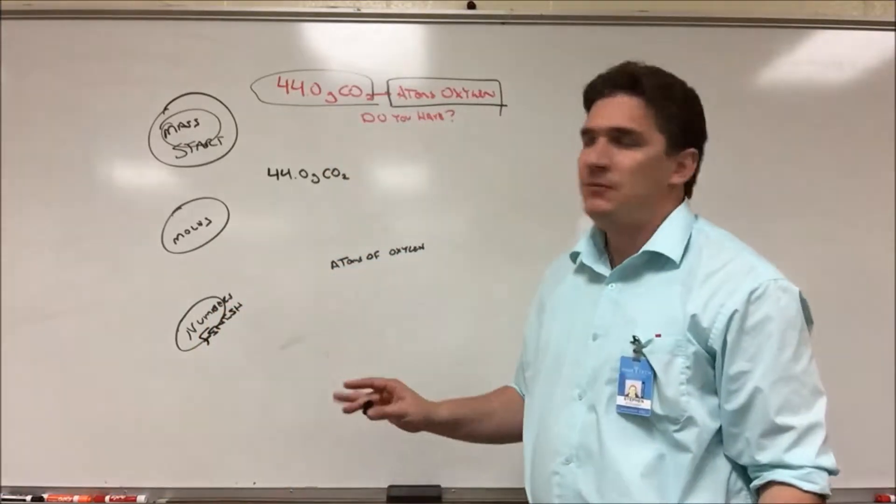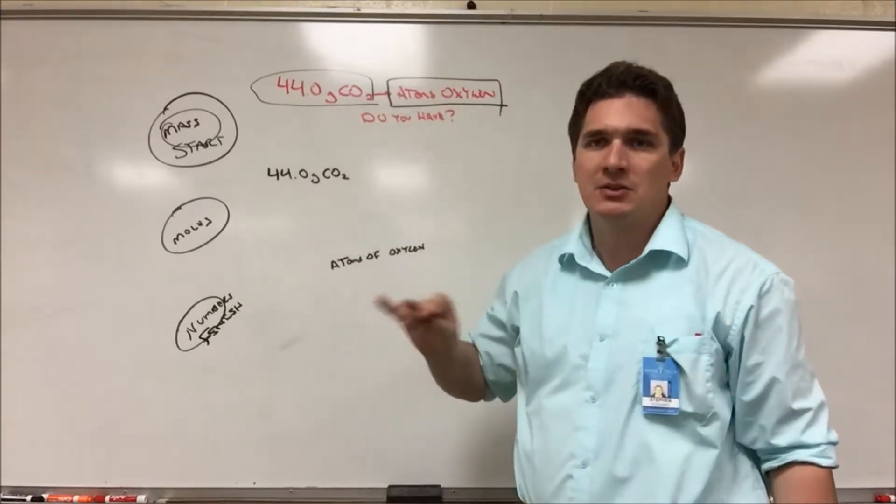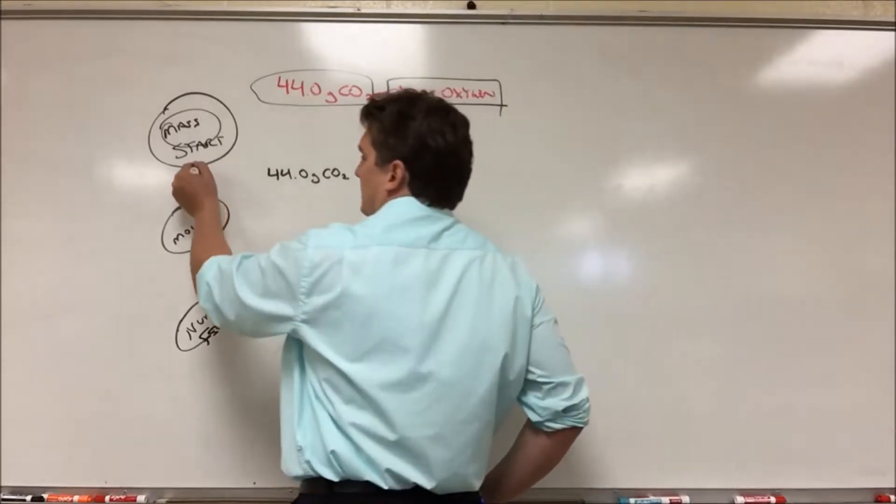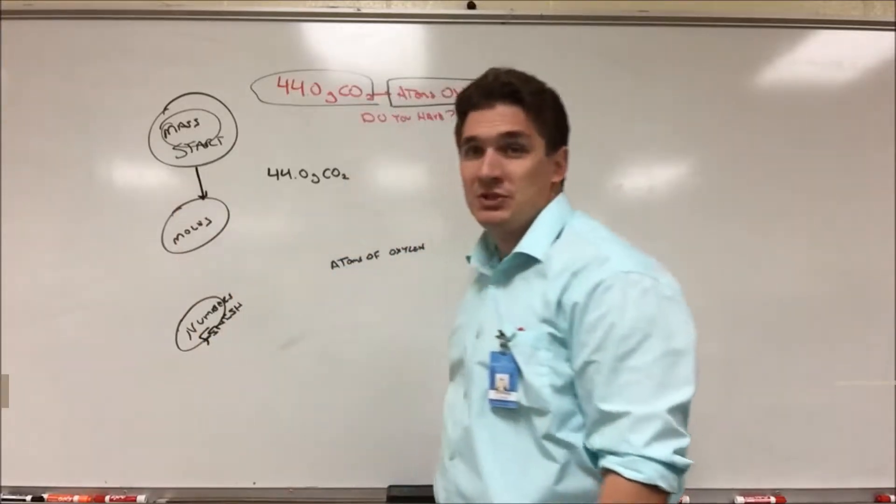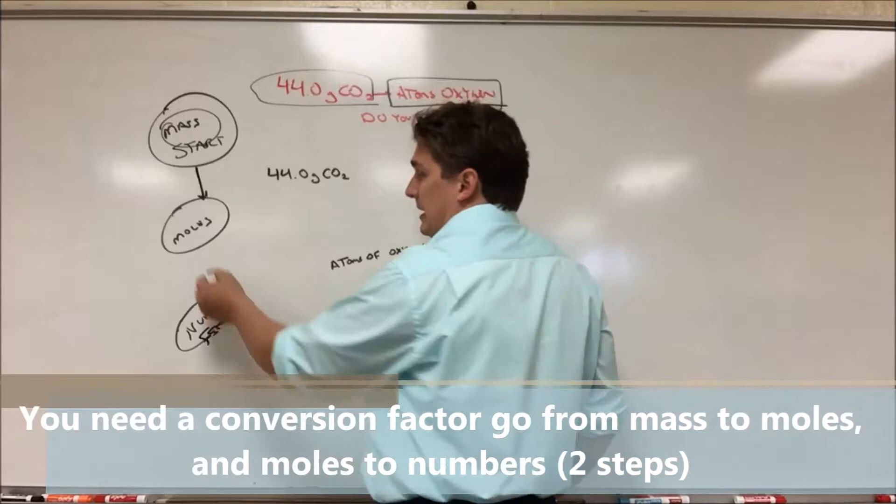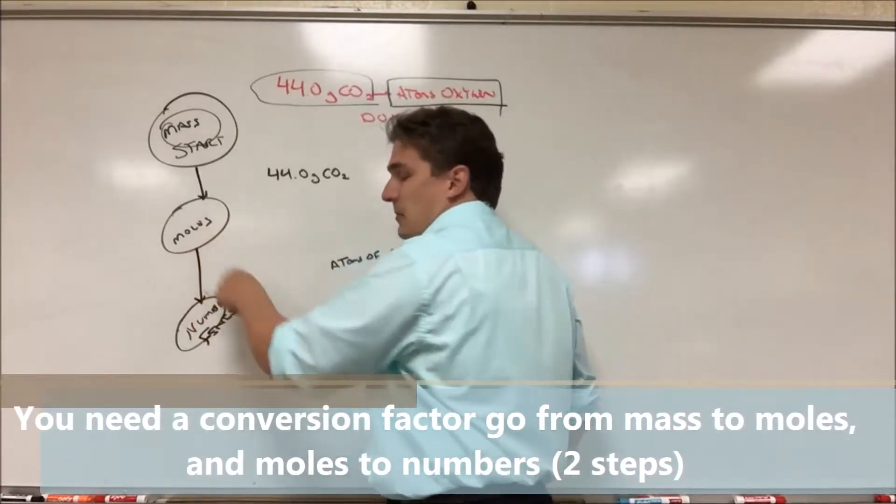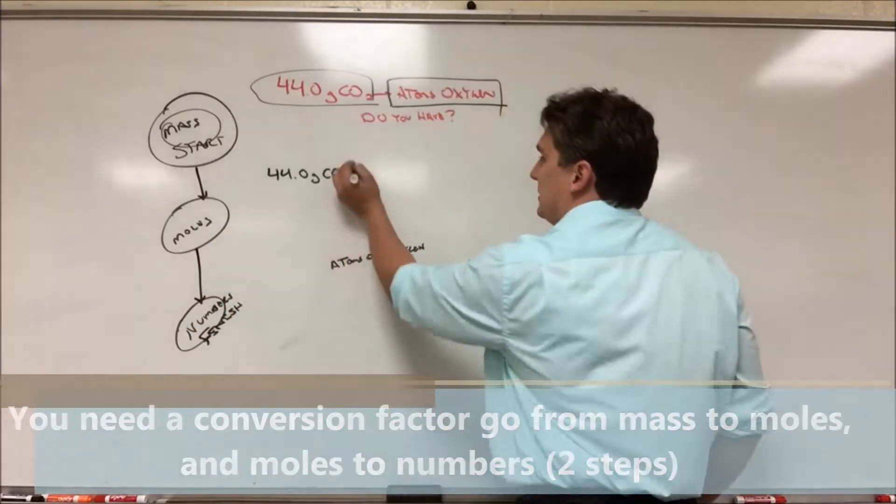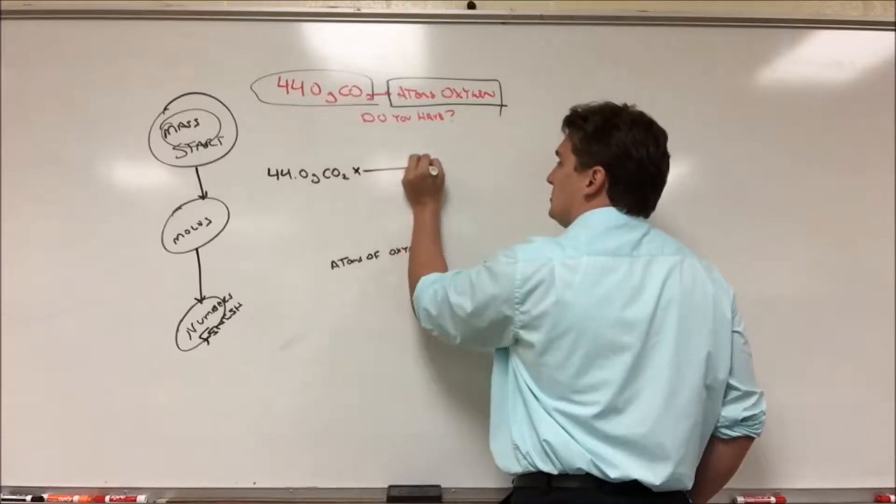So just if we were asked to go from grams of CO2 to molecules of CO2, we'd have one step, which is the mass to moles conversion. So we have at least one factor in there. And the second step, which is the moles to numbers conversion. So we need to have at least those two conversion factors.